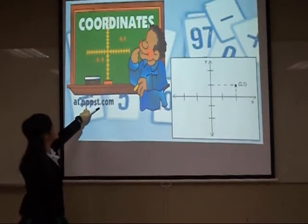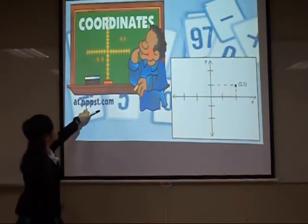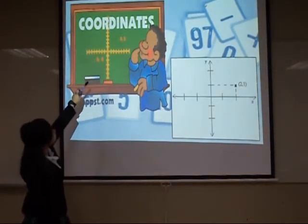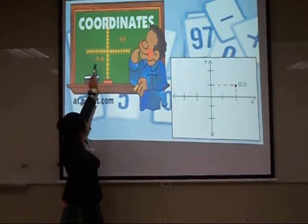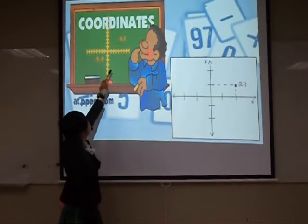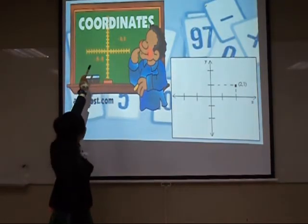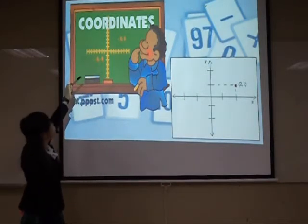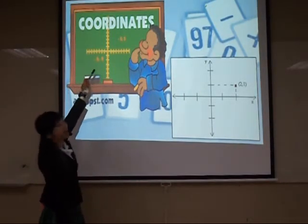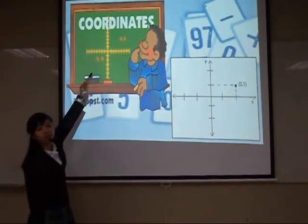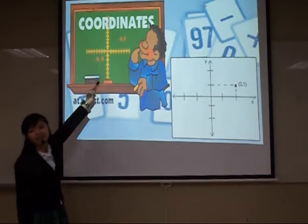This is another example of how you plot the coordinates. You are given four and three. So from the X-axis: zero, one, two, three, and four. And then from the Y-axis: zero, one, two, and three. Connect the lines and plot your coordinates.